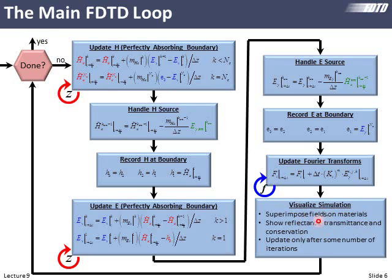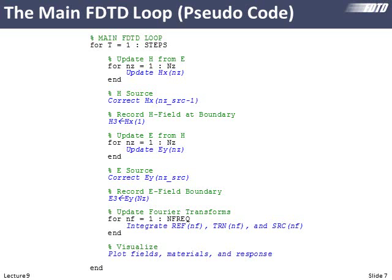We want to visualize things while this is running. This is our pseudo code for doing that. Again, we wrap everything in this time loop. Then we wrap our update of HX inside a loop over Z. We add our correction term for the total field scattered field. We record the H field at the boundary. Then we do a similar update by looping over Z and updating our E sub Y term. Then we incorporate our correction for the source, record our boundary terms. Then we loop over frequency and add up all of our Fourier transforms, and then perhaps visualize our fields.